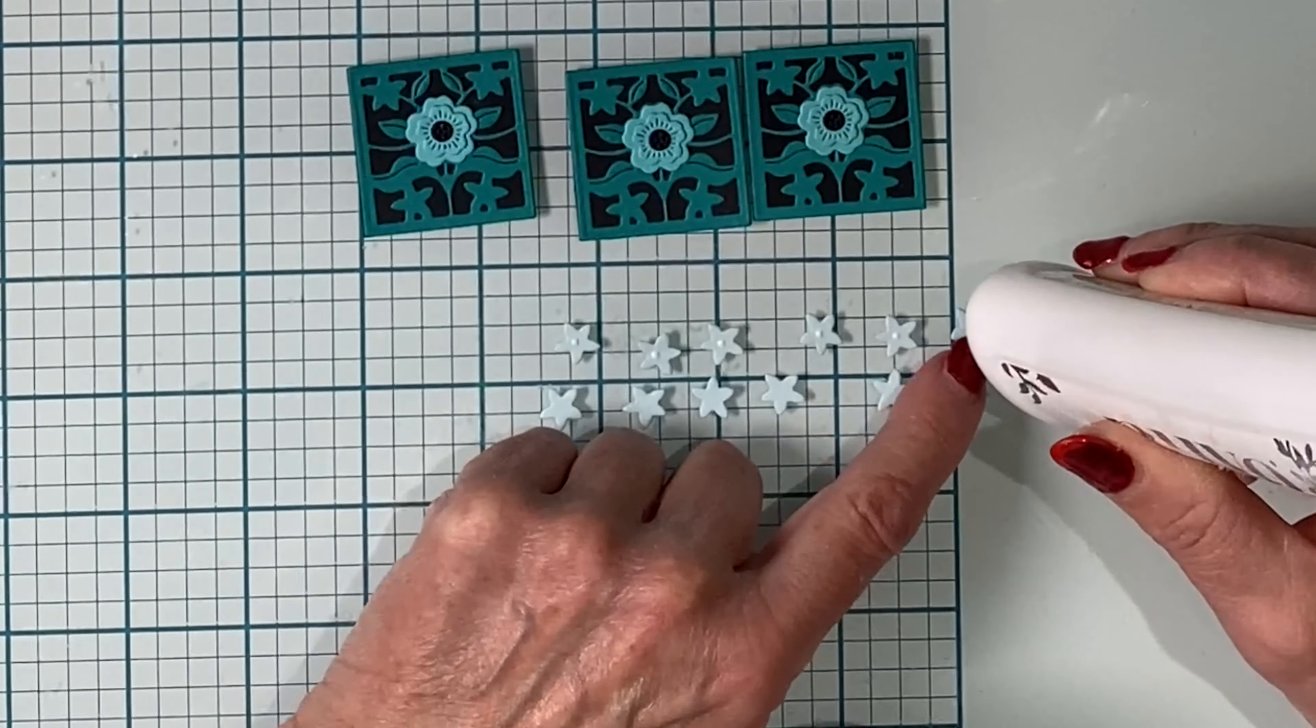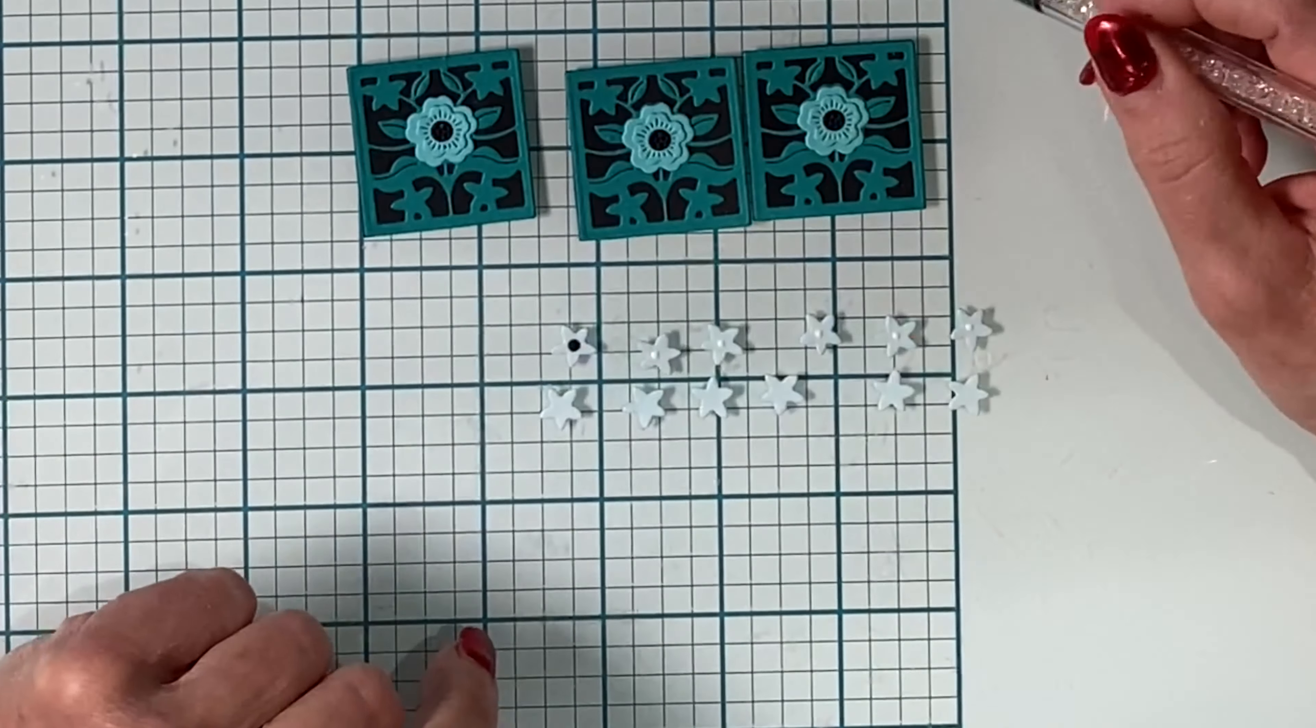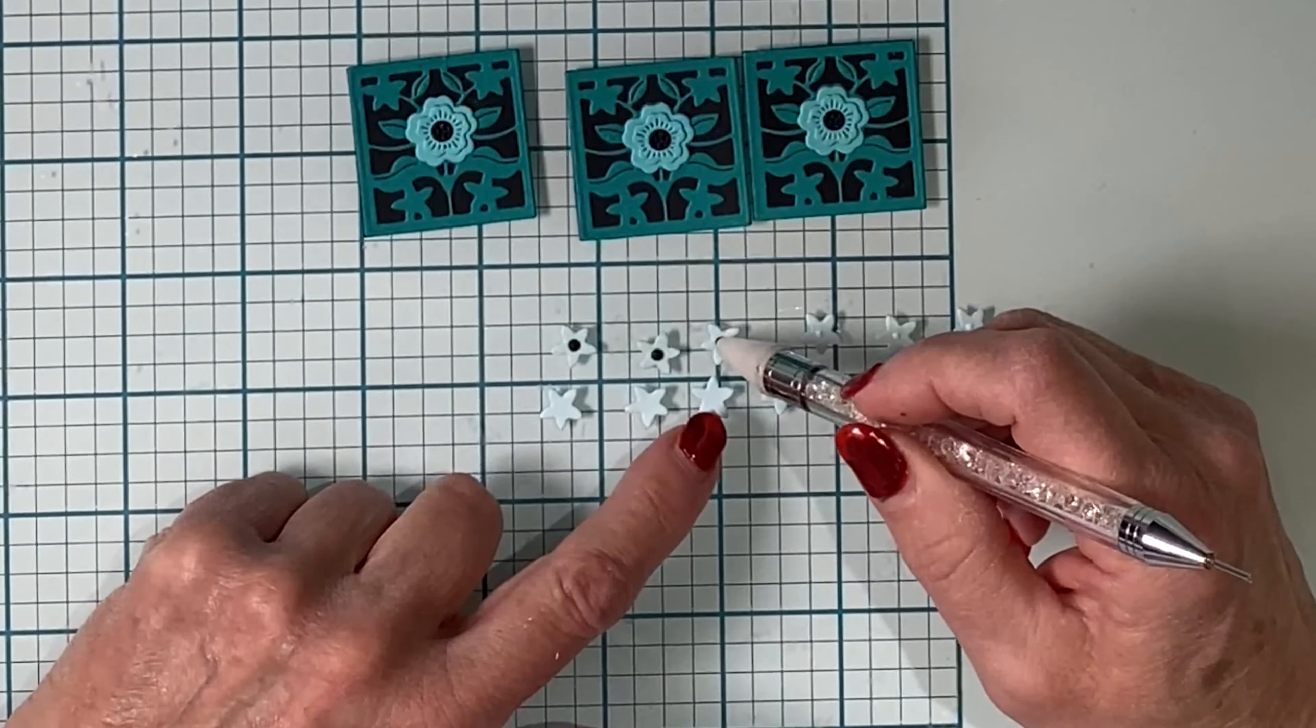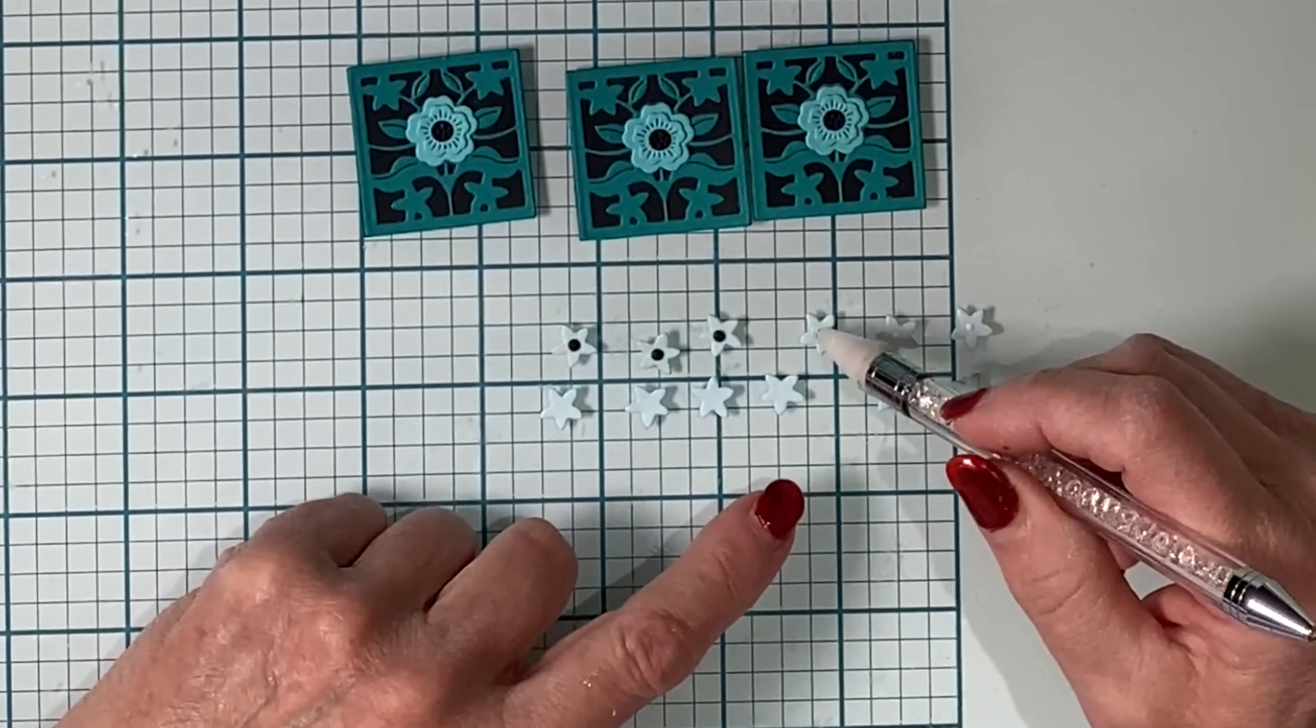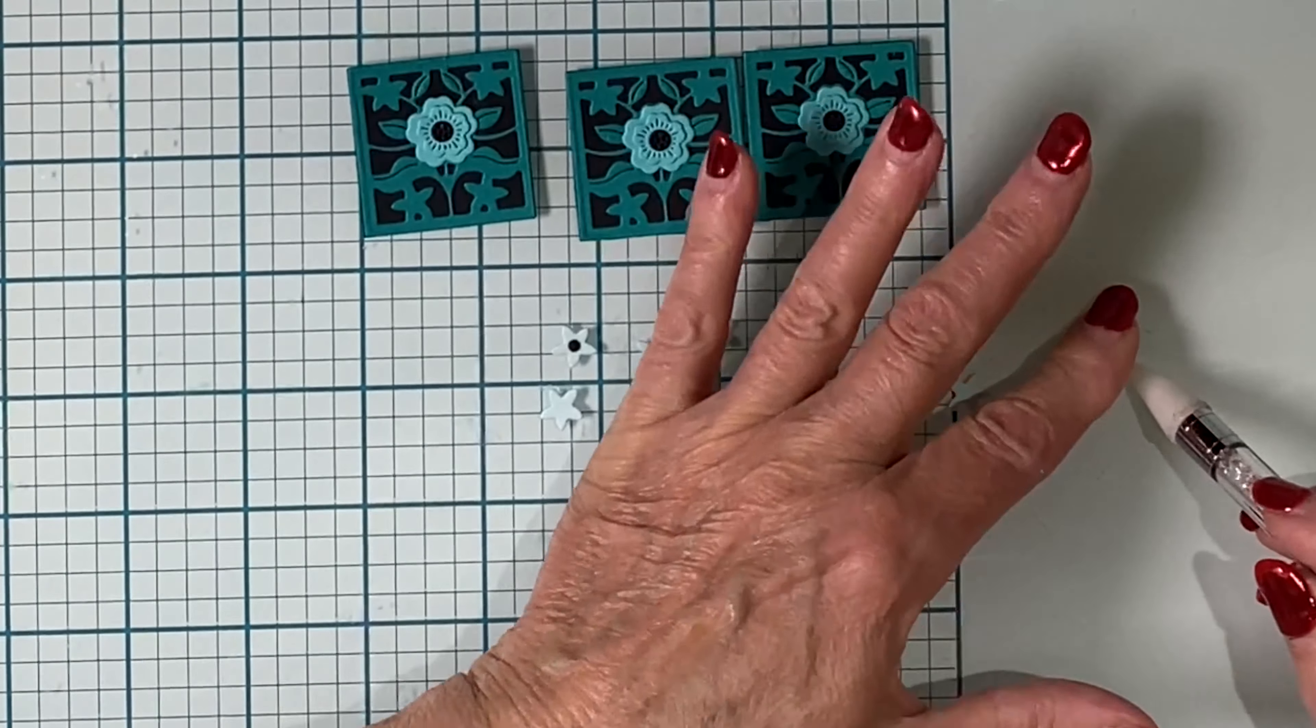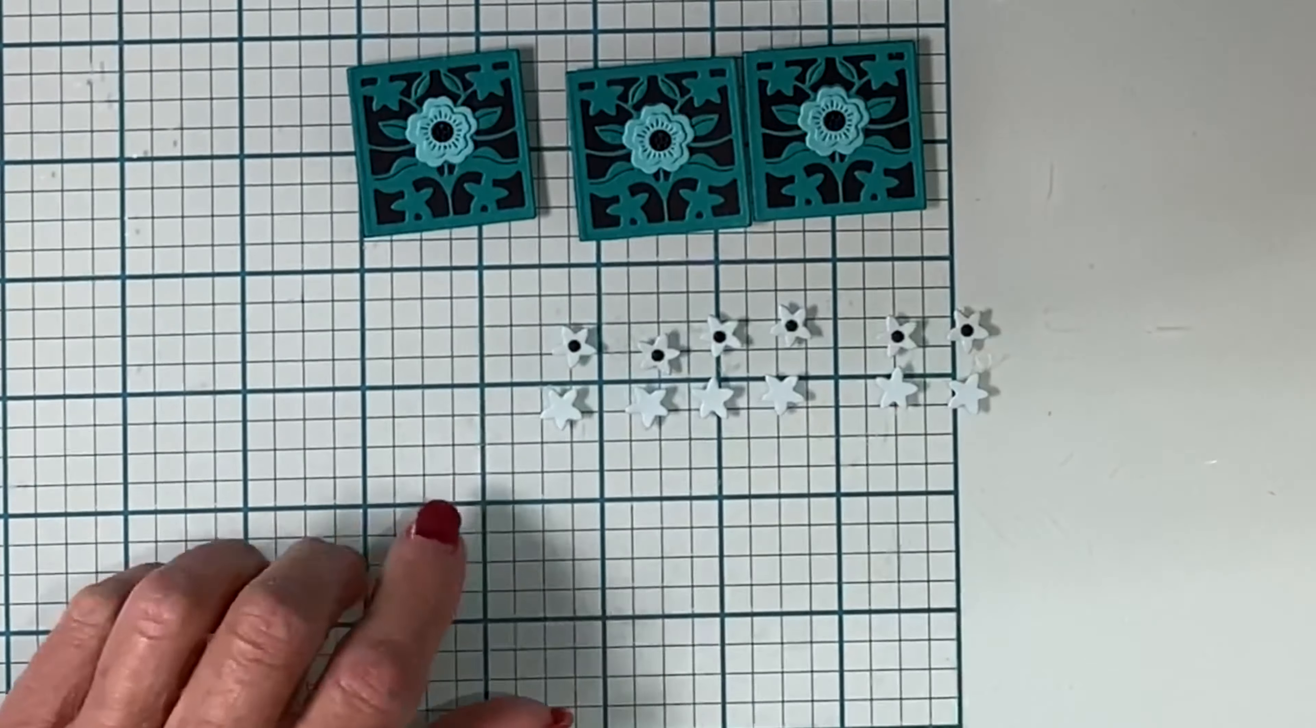As I lined up these little flower die cuts, I would pick each one up and place it between my thumb and finger and just rub it. The smooth side is the side that is the right side to place upwards. You can feel the little die cut ridge on the wrong side.